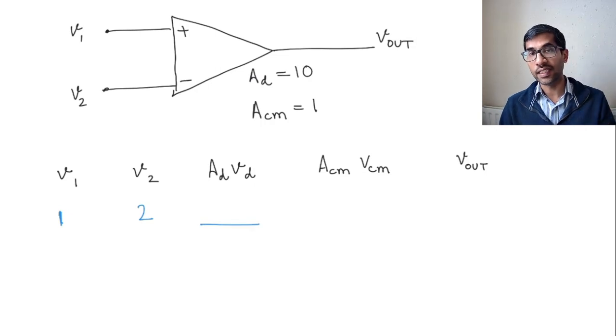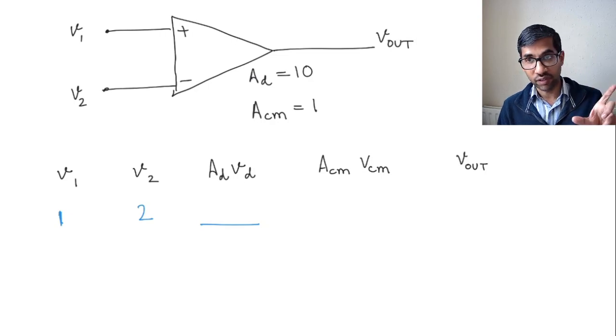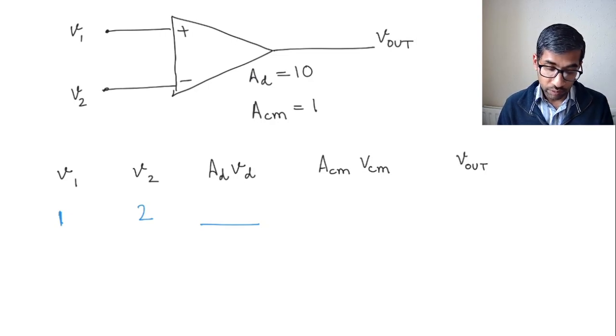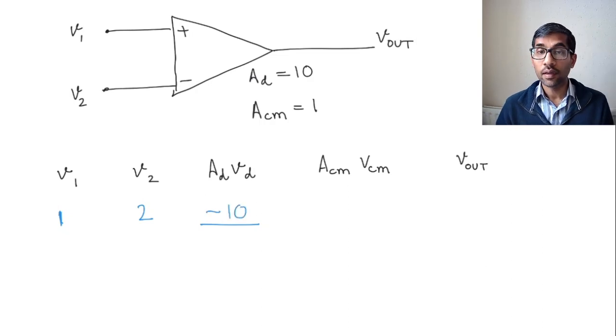So what is VD? That is V1 minus V2, right? That's the difference of the voltages. So V1 minus V2 is here minus 1 volts. And that is multiplied by AD, which is 10. So minus 1 times 10, so it's minus 10 volts. So we get minus 10.